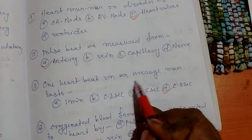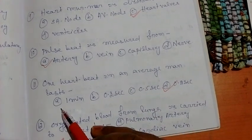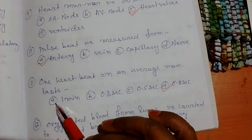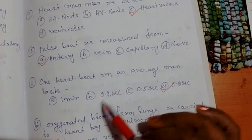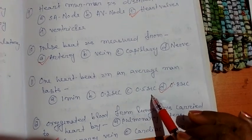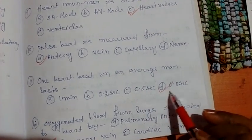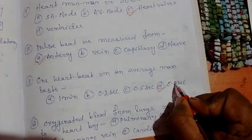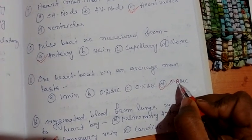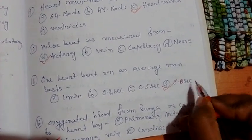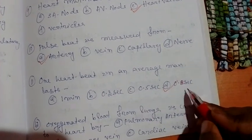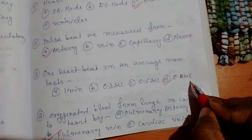Question number 11: one heartbeat in an average man lasts — four options: A, one minute; B, 0.2 second; C, 0.5 second; D, 0.8 seconds. The correct option is D, that is 0.8 seconds. One heartbeat in an average man lasts for 0.8 seconds.